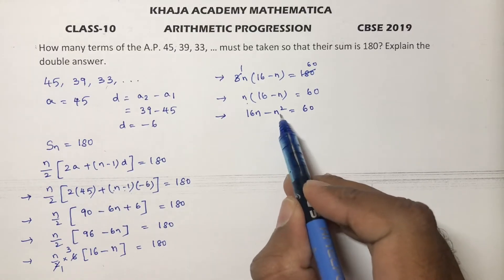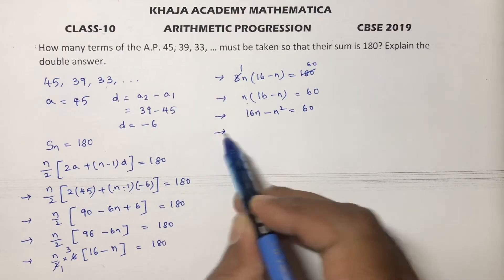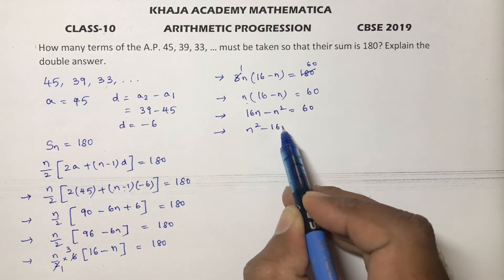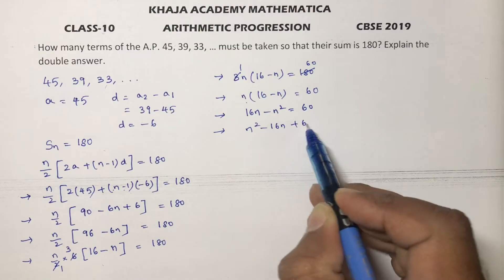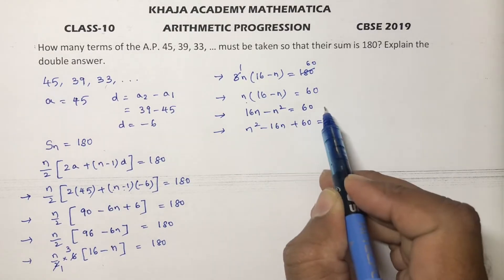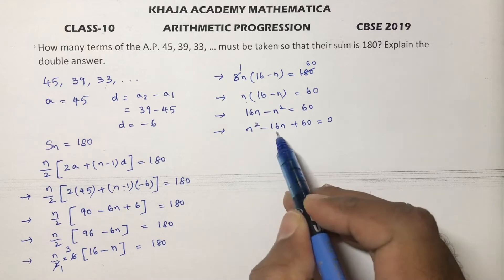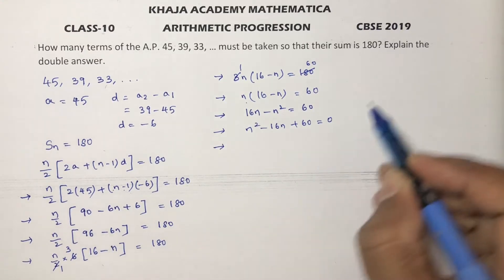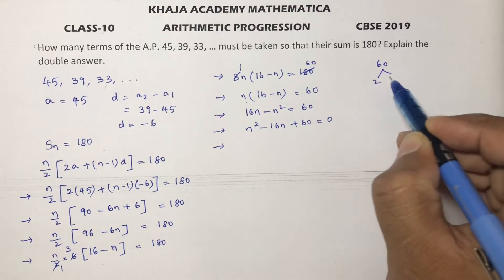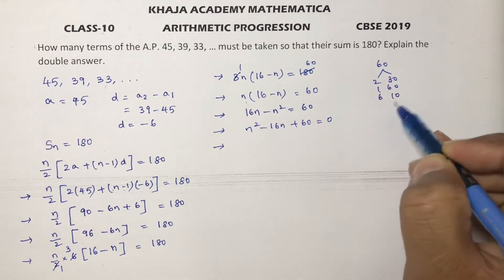Since n squared is negative, transposing terms to the right side gives the standard quadratic equation: n squared minus 16n plus 60 equals 0. To factorize 60, we consider factor pairs: 2×30, 1×60, 6×10, 5×12 — and 6 and 10 work.